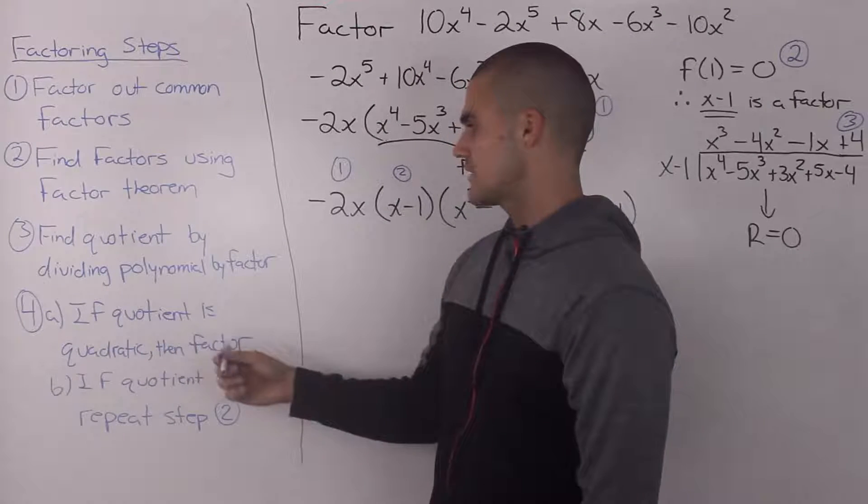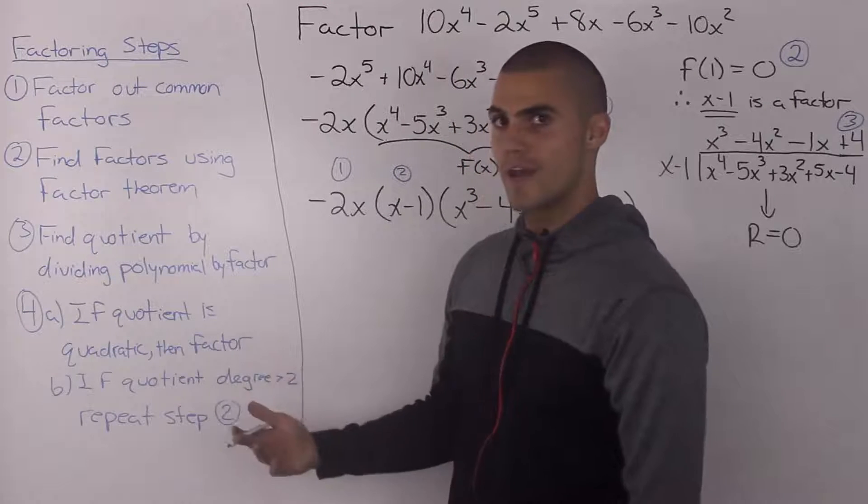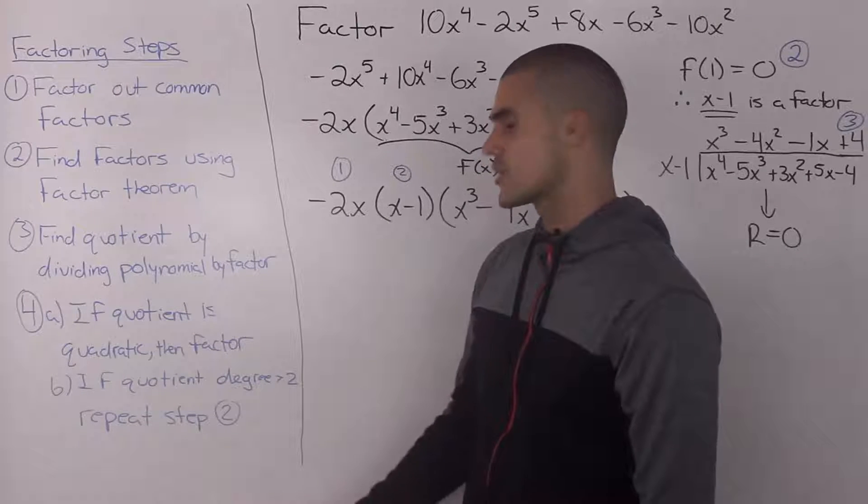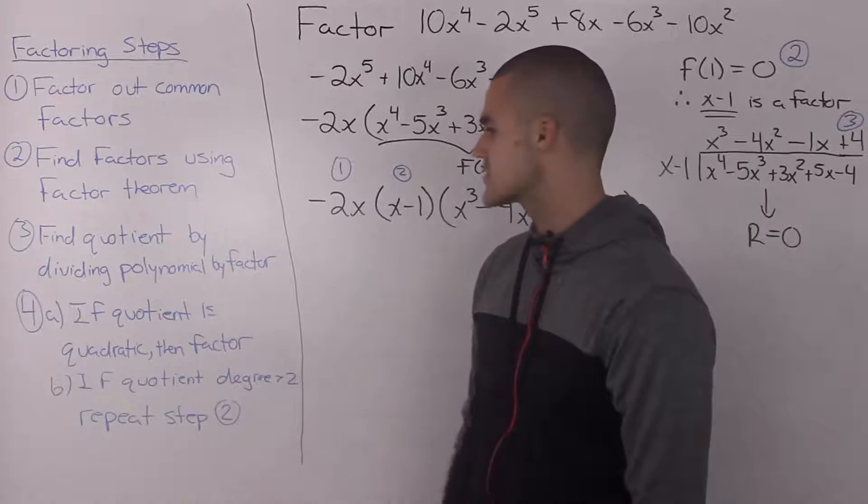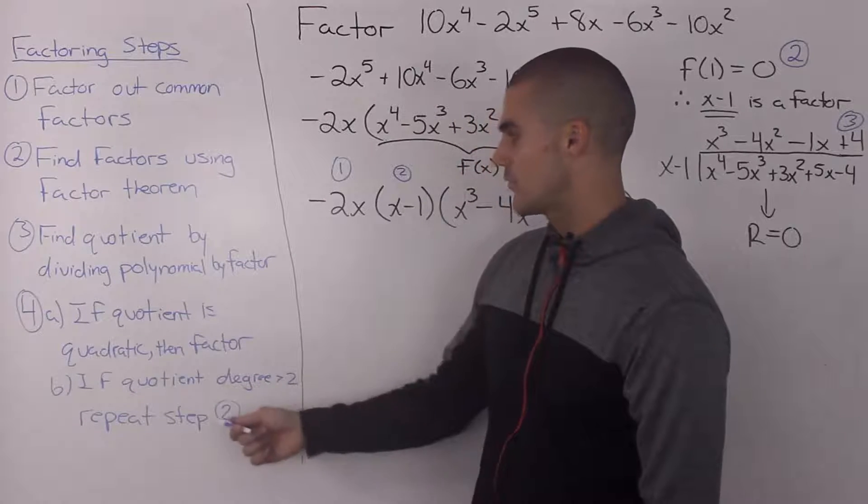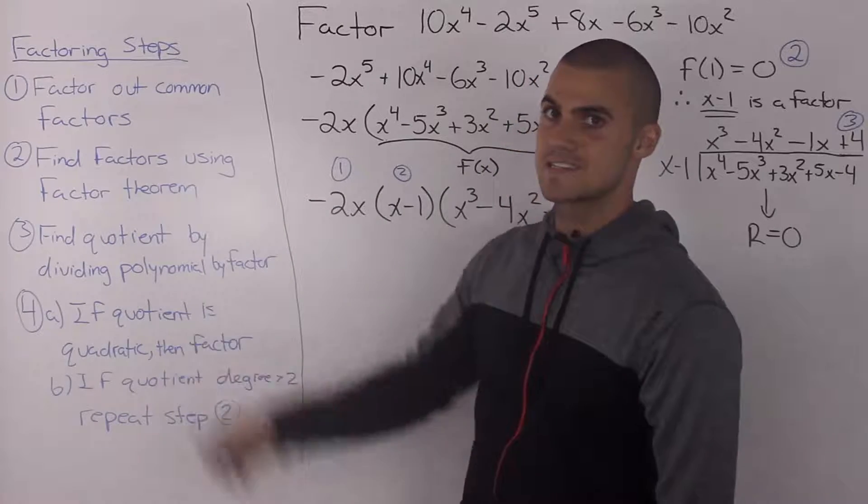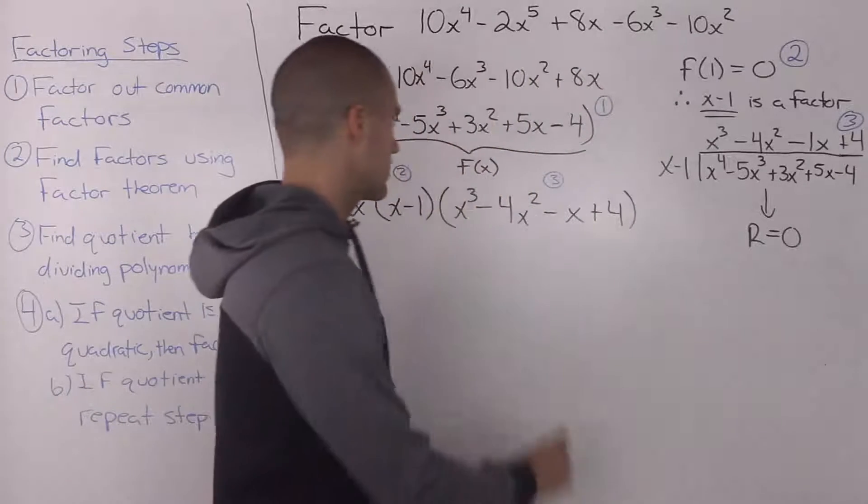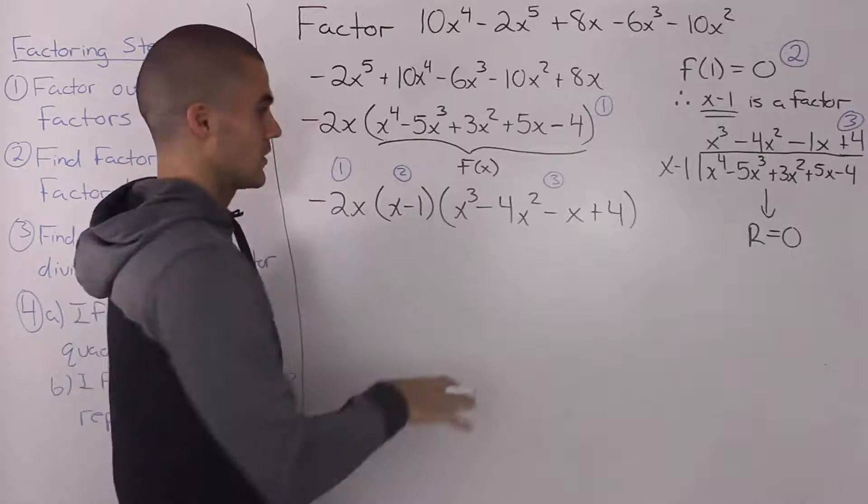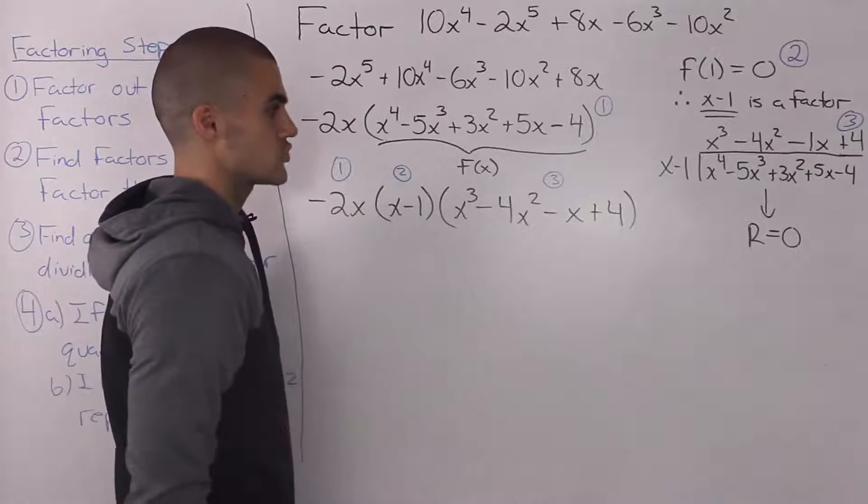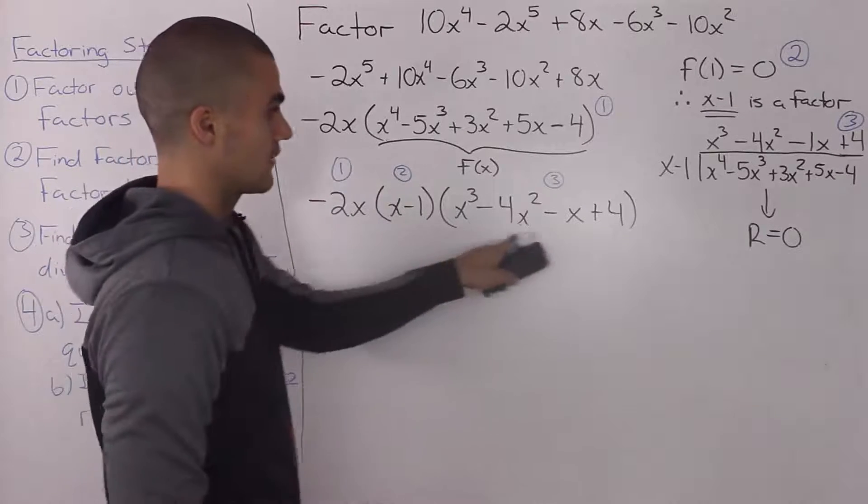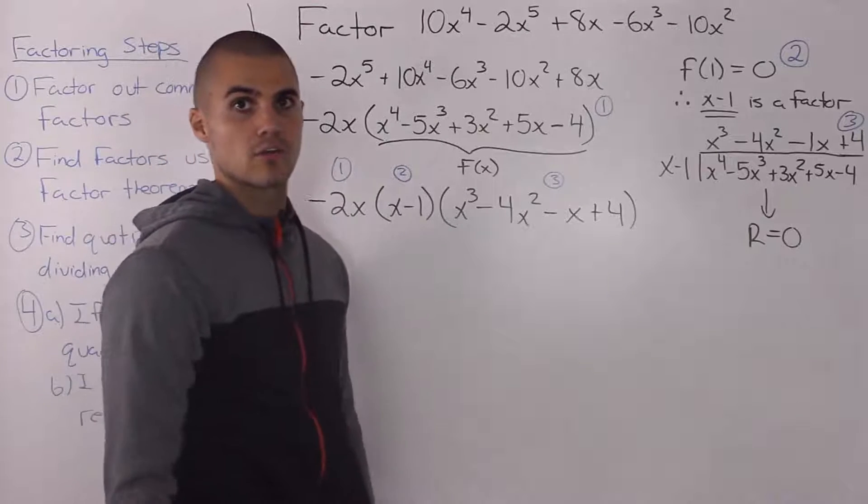Now step 4 says that if the quotient that we got in step 3 is a quadratic, then we can just factor it using techniques that we already know of. So quadratic formula or we can use decomposition. However, if the quotient has a degree that's greater than 2, then we have to go back and repeat step 2. And notice how the quotient that we have remaining has a degree of 3. So we're not just going to be able to factor it smoothly because it's not a quadratic. So we're going to have to go back to step 2 and now factor this polynomial using the factor theorem.